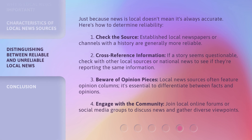Just because news is local doesn't mean it's always accurate. Here's how to determine reliability: 1. Check the source — established local newspapers or channels with a history are generally more reliable. 2. Cross-reference information — if a story seems questionable, check with other local sources or national news to see if they're reporting the same information. 3. Beware of opinion pieces — local news sources often feature opinion columns; it's essential to differentiate between facts and opinions. 4. Engage with the community — join local online forums or social media groups to discuss news and gather diverse viewpoints.